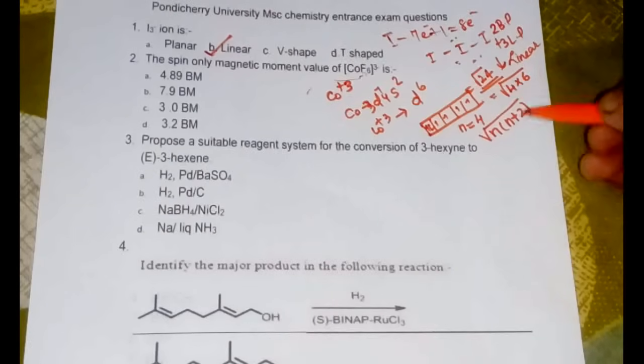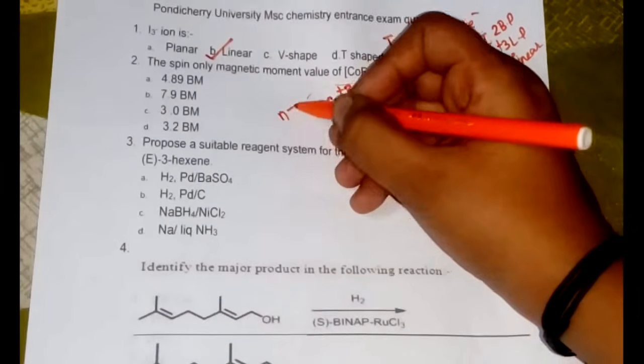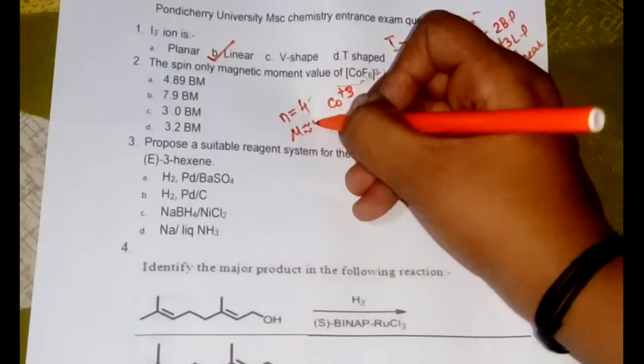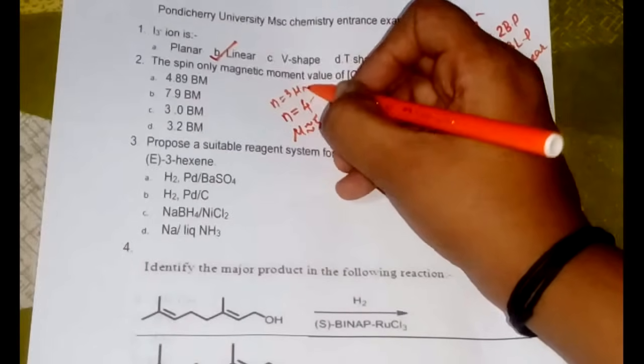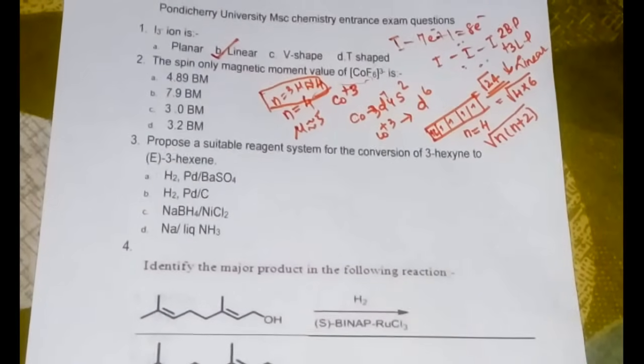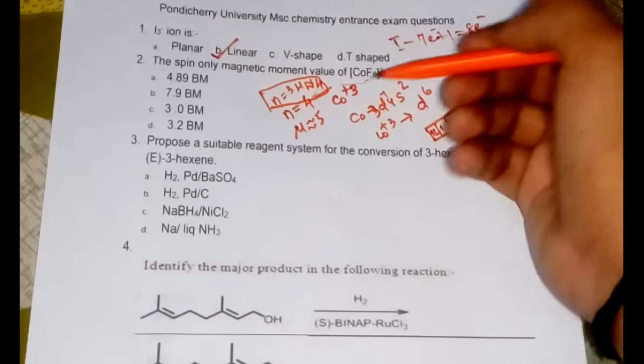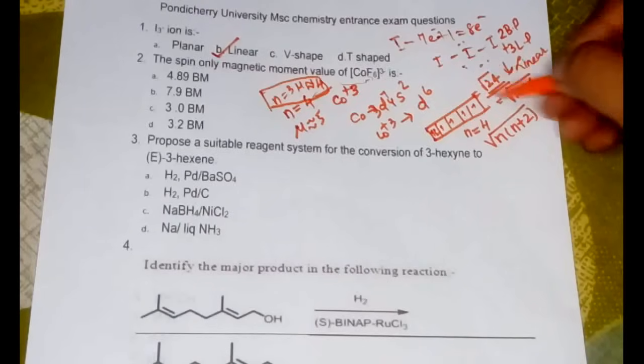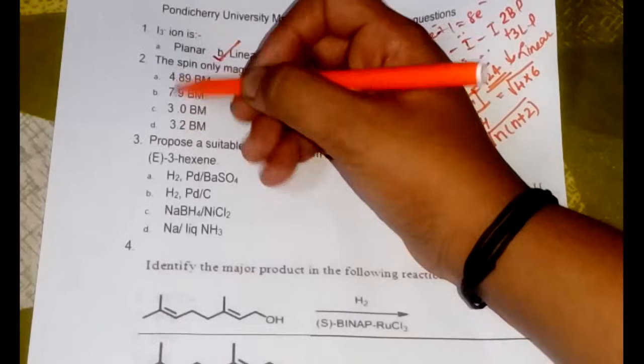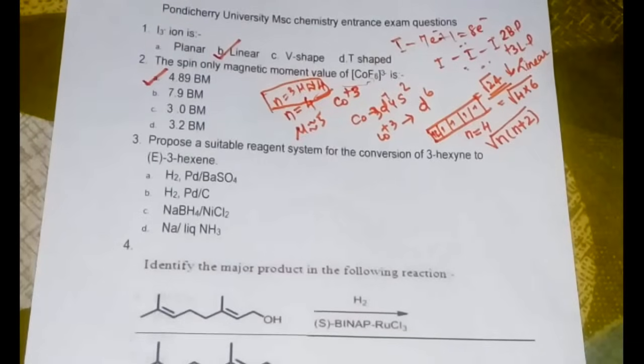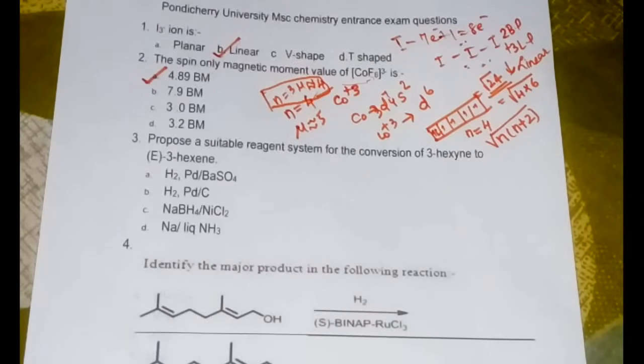Without even substituting this we can directly write: if the number of unpaired electrons n is equal to 4, then the magnetic moment value would be approximately equal to 5. If n is equal to 3, the magnetic moment value would be approximately equal to 4. I have already made a video on this, I will be giving the link in the description box below. So according to that assumption, the value should be approximately equal to 5. Out of these four options, the value A is 4.89 Bohr magnetron, so that would be the answer.